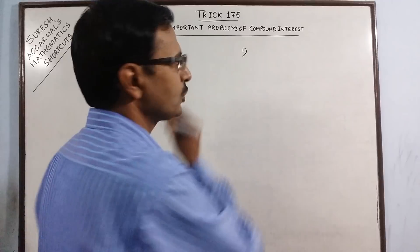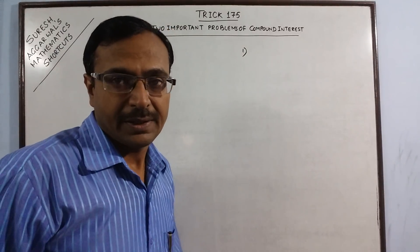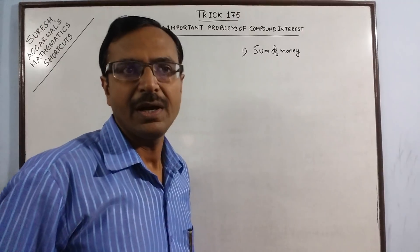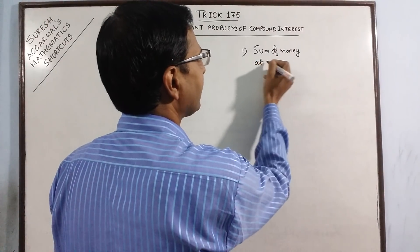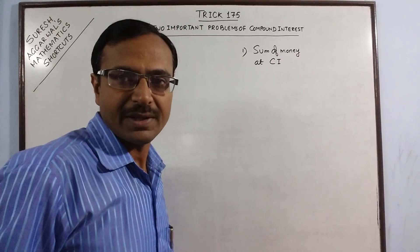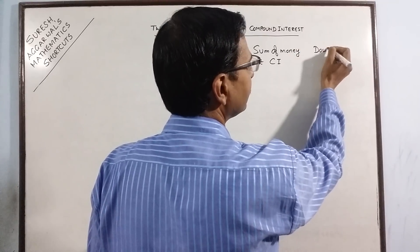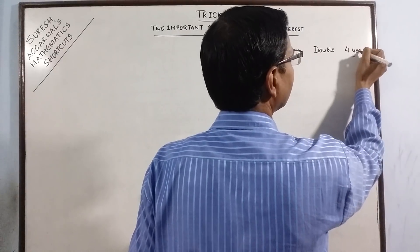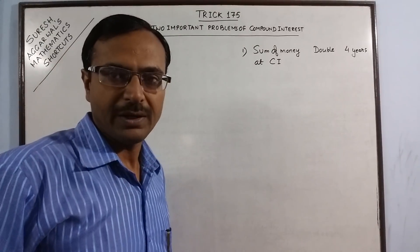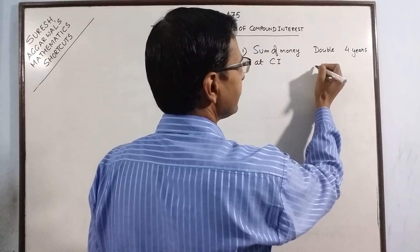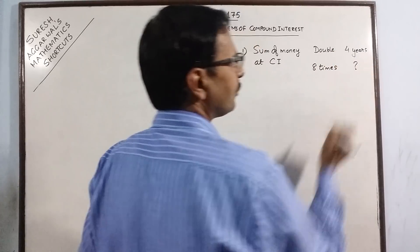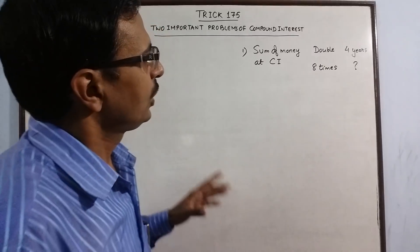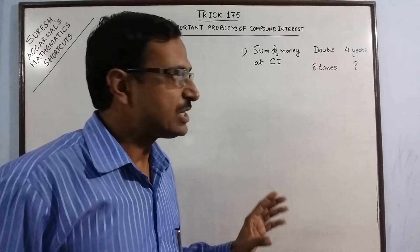The first problem is: a sum of money is invested at compound interest. It is given that the sum of money doubles in a particular time — here, in 4 years. We have to find in how much time it will become 8 times its principal value. A very important question, and the traditional method will consume a lot of time.